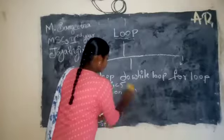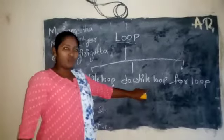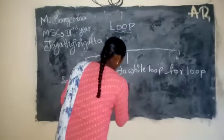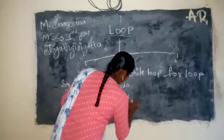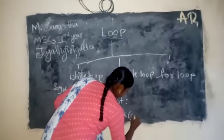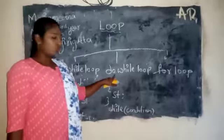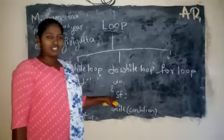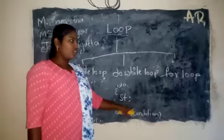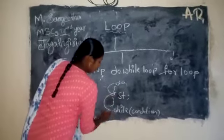Next is the do-while loop. Do-while loop is similar to the while loop, but it is a post-test and an exit control loop. The syntax for the do-while loop is: do, statement, while condition. In the do-while loop, we are directly oriented to the statement — we don't check the condition first. We will go to the statement and print it.